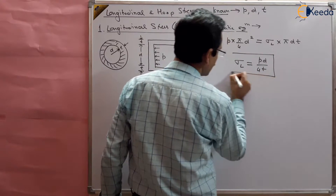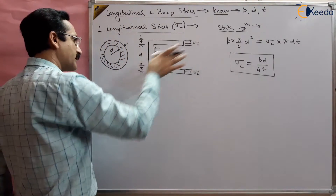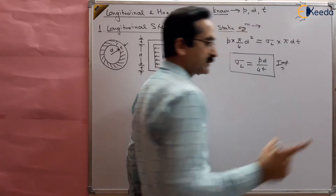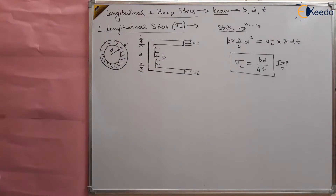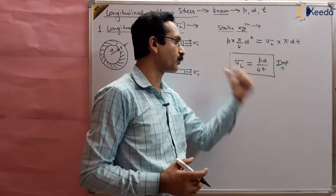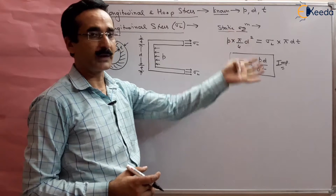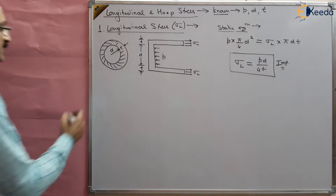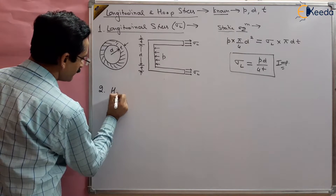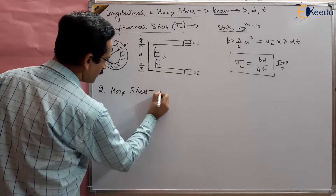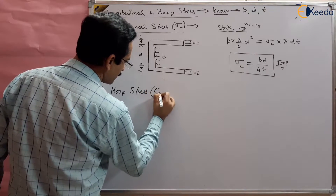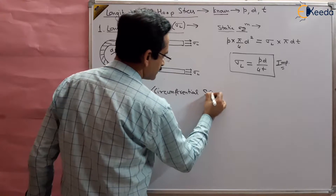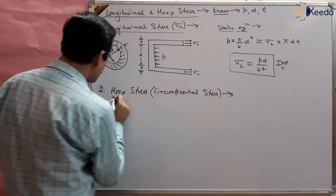So this is the longitudinal stress developed in the cylinder in the longitudinal direction. Remember that longitudinal stress in thin pressure vessels is given by P D by 4 T — a very important formula which we will apply directly in our numericals. P D by 4 T is the stress developed in the linear or longitudinal direction. Second is the hoop stress, also called circumferential stress because it acts along the circumference.